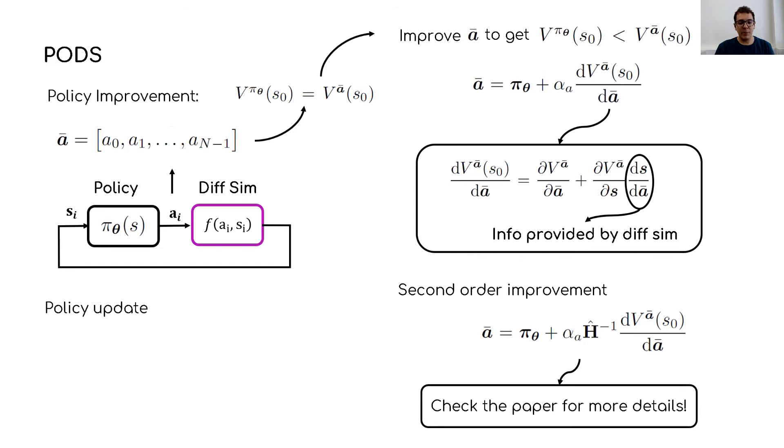Finally, the policy update in parameter space can be done by minimizing an imitation learning loss of the monotonically improved actions.